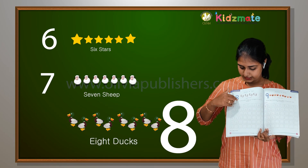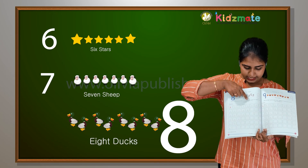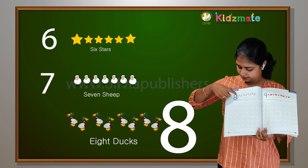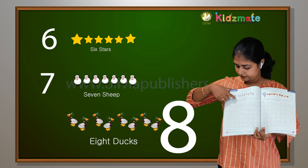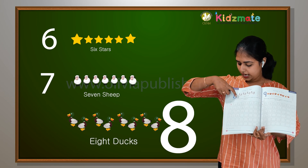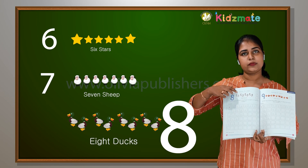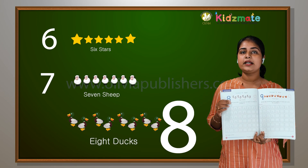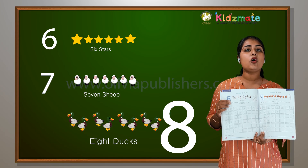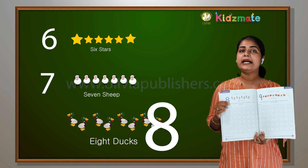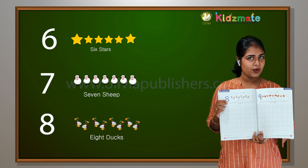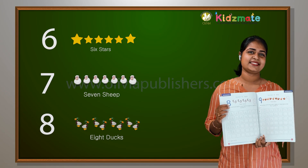Half a round and half a round and up again. After making this half and this half, you should go up also. So half a round and half a round, and go up to make the number eight.